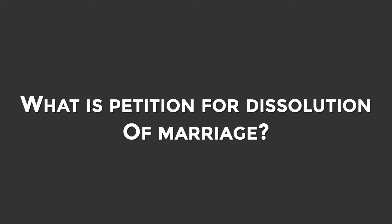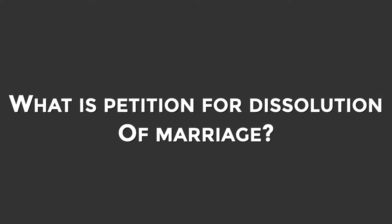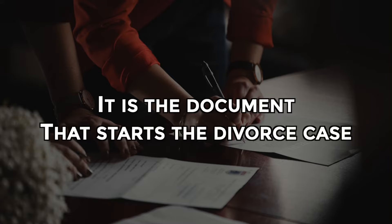We're going to explain what a petition for dissolution of marriage actually is. In Illinois, a petition for dissolution of marriage is the document that starts the divorce case. It is like a complaint in a civil case — a document that lists the basic facts, the people involved, and the issues. It is the document required to be filed with the court to initiate the divorce. It's usually two or three pages, filed with the clerk of court.